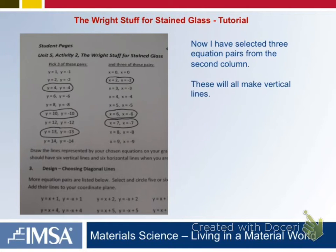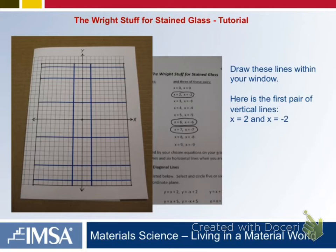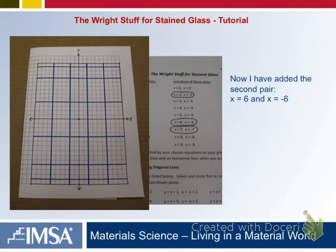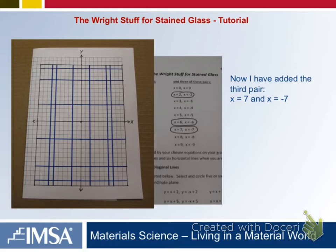Then you're going to choose three pairs from the right column — these are going to be your vertical lines, and you will draw them on your coordinate plane. For example: 2 and negative 2, 6 and negative 6, 7 and negative 7. You get to pick any ones that you want to, and you're going to start to make a pattern.